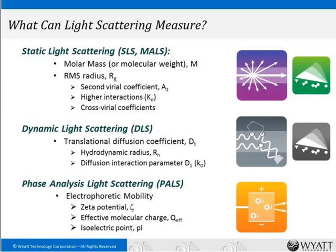Once you have molecular weight and radius, you can derive additional properties. For instance, how does the apparent molecular weight or size change with concentration? That gives you the second virial coefficient, a measure of nonspecific interactions. You can also characterize higher-order interactions — for instance, determine the KD of self-association — and for cosolutes, determine the cross-virial coefficients, which are a measure of nonspecific cross-interactions.